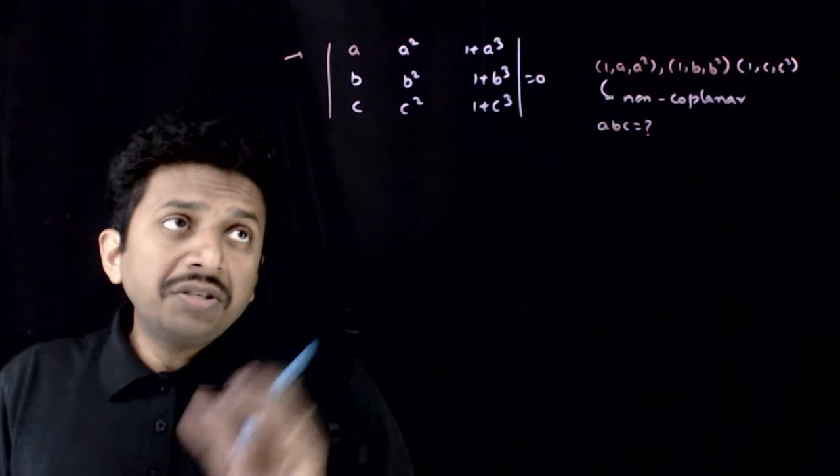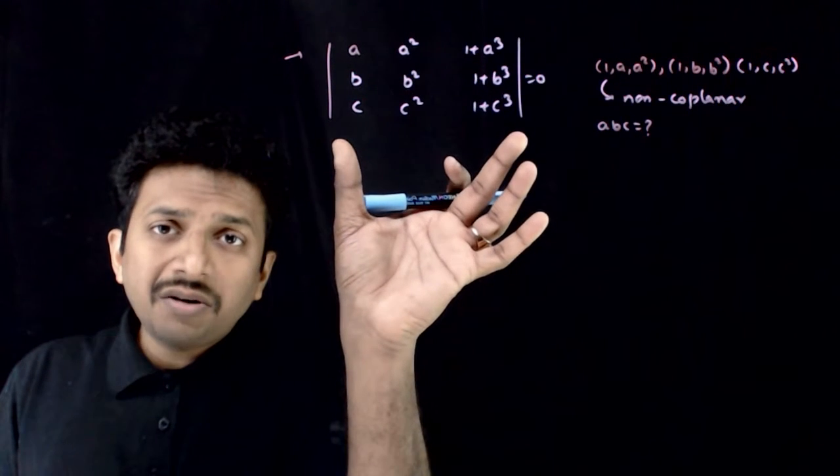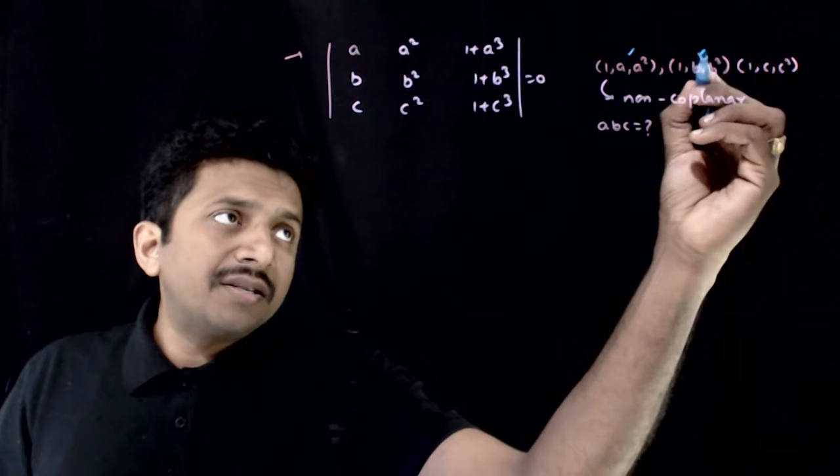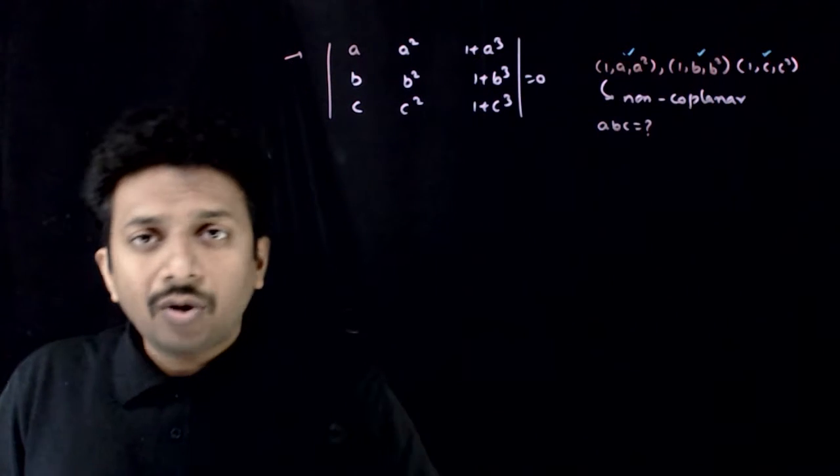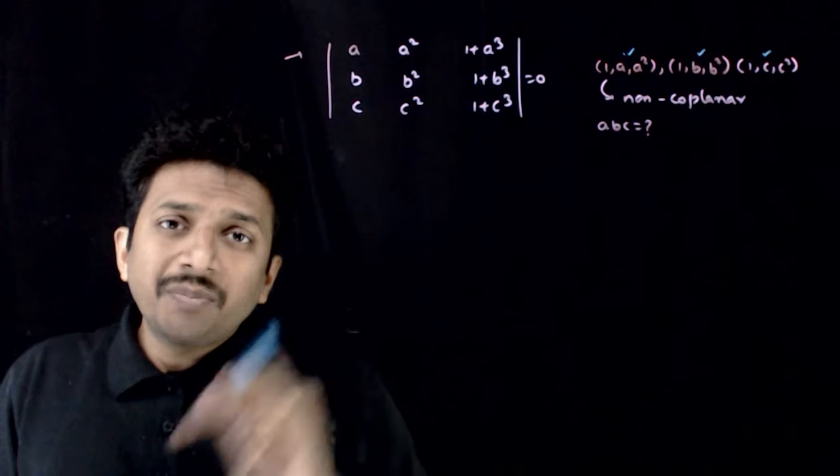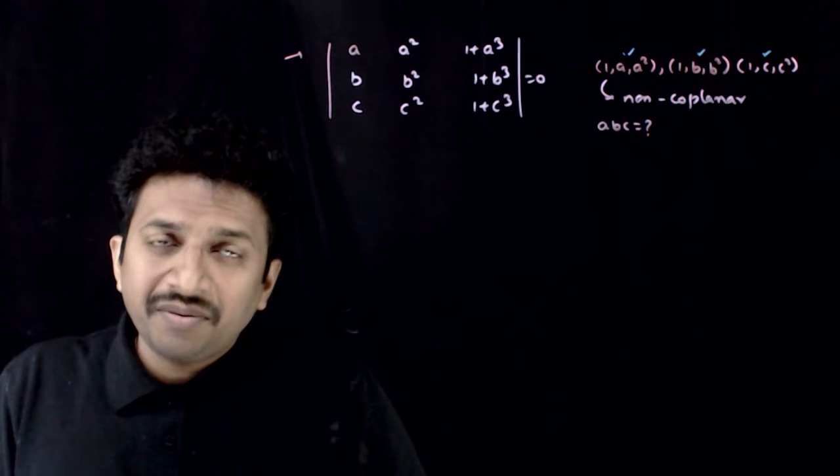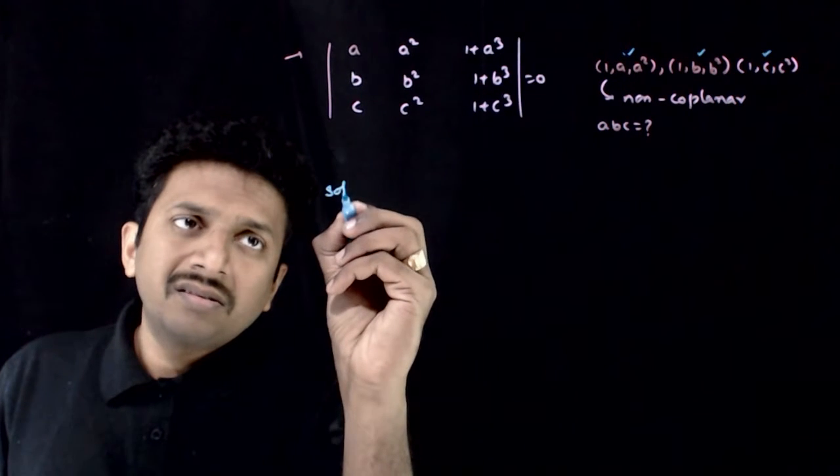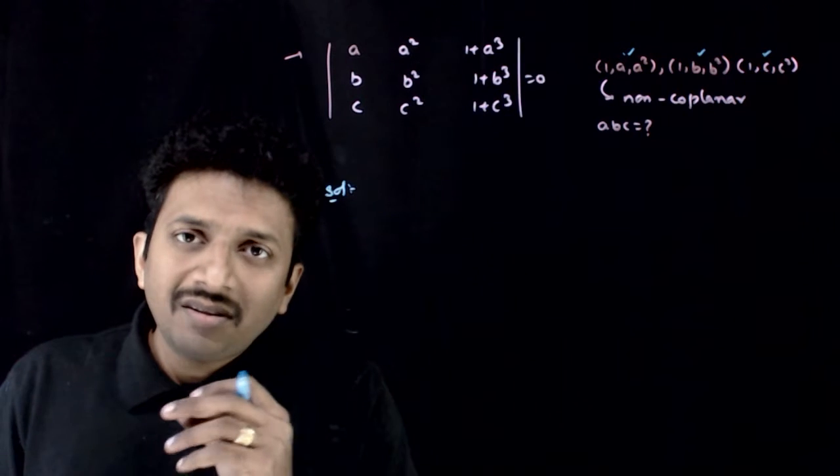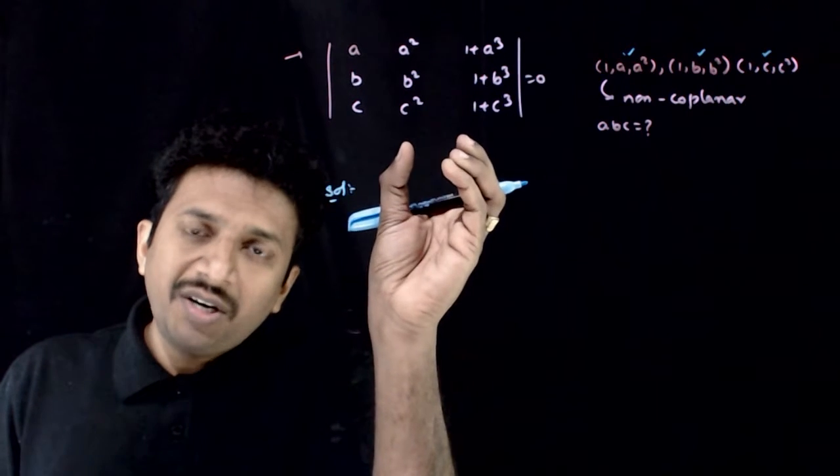So, welcome students. This question is given that this determinant is equal to 0 and these three vectors are not coplanar. If that is so, what is the product of A, B and C? So, on seeing this determinant, you can think of splitting this determinant into two parts.